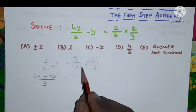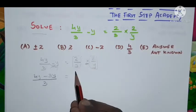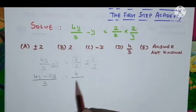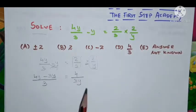On the right hand side, 2 into 2 is 4 divided by 3 into y is 3y.